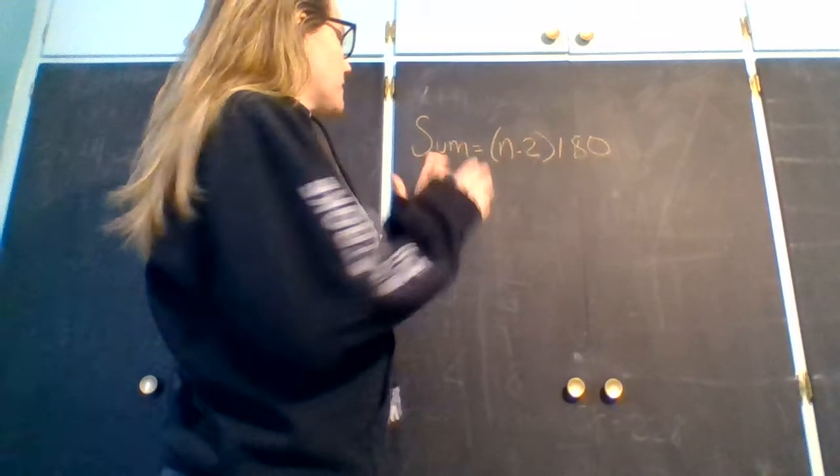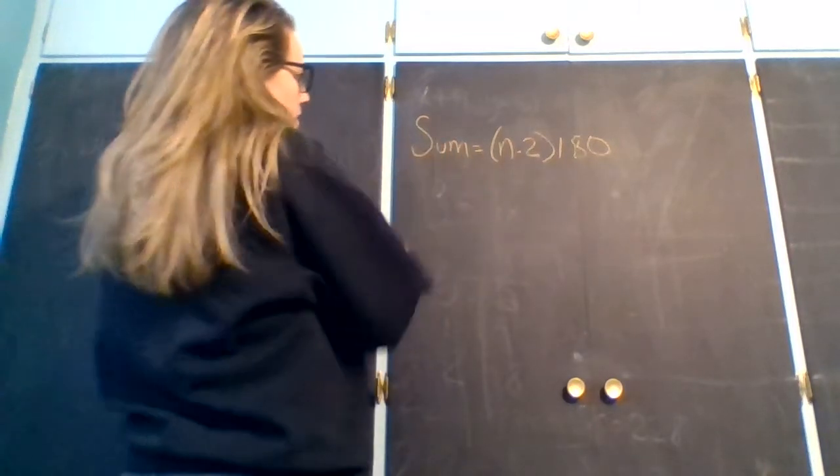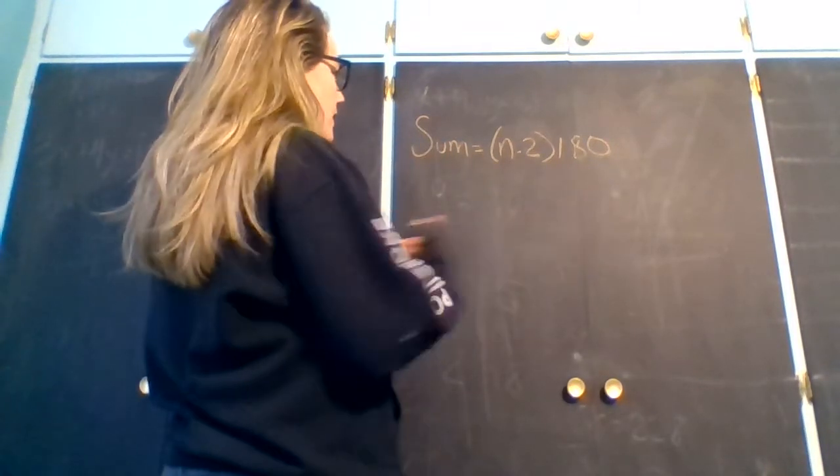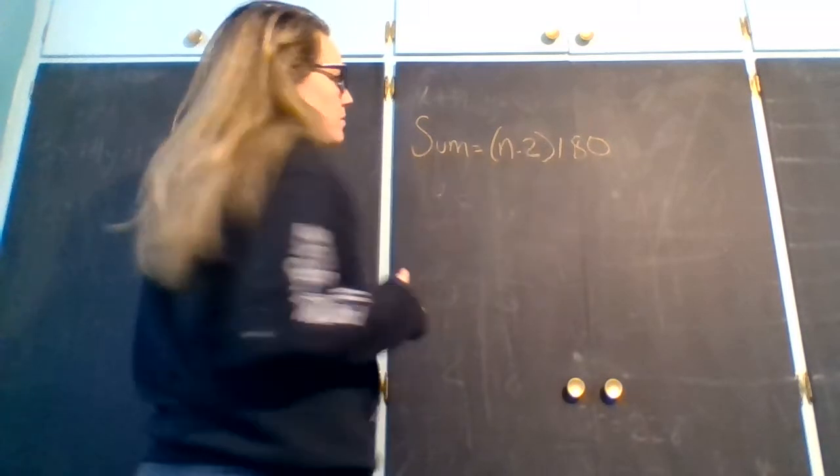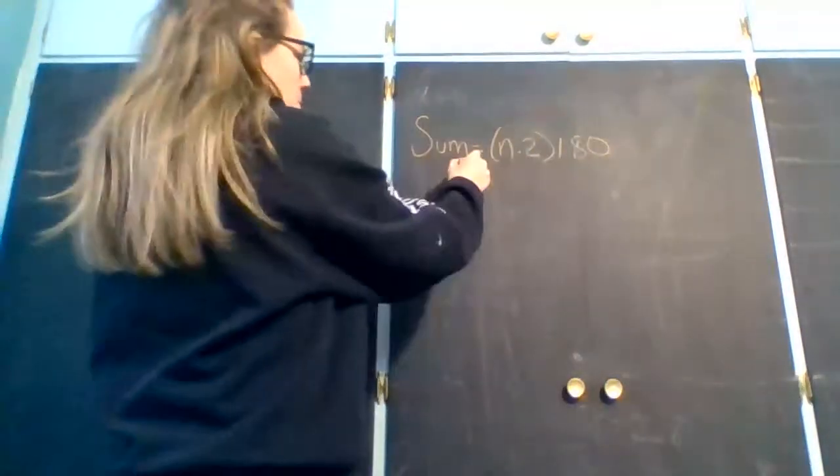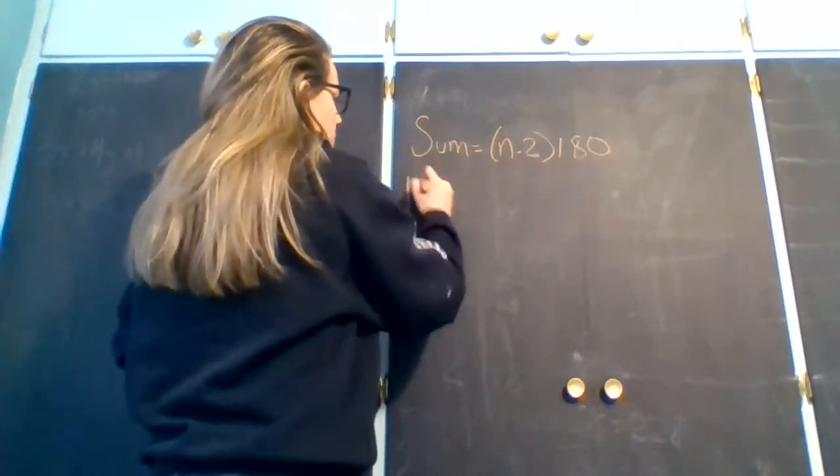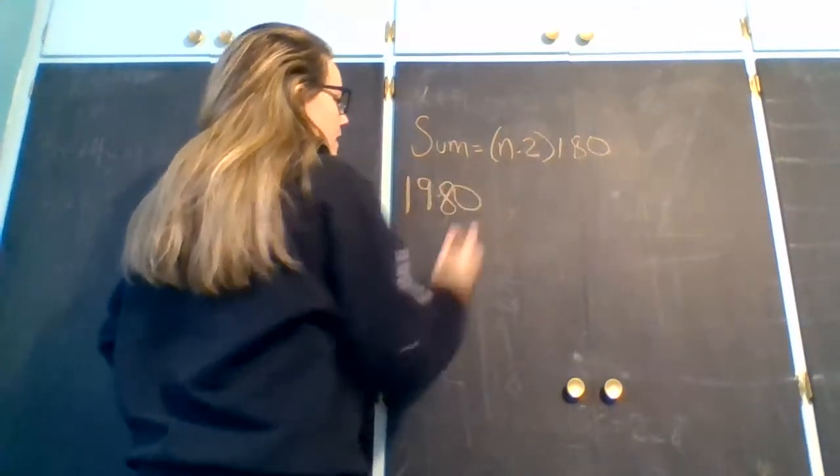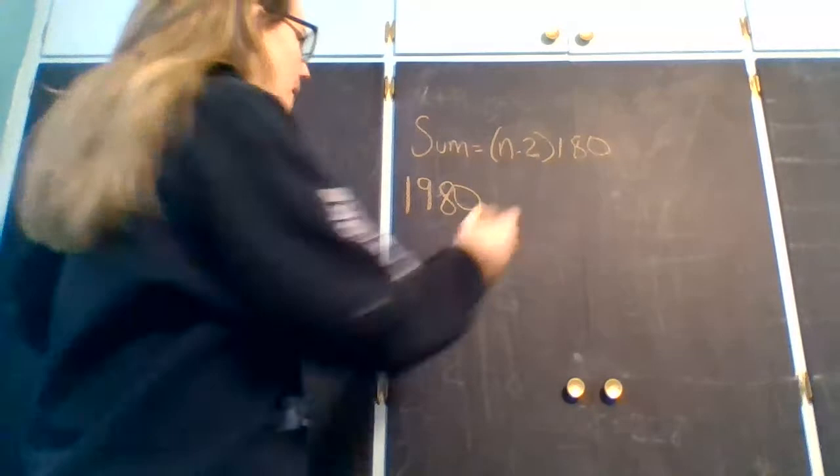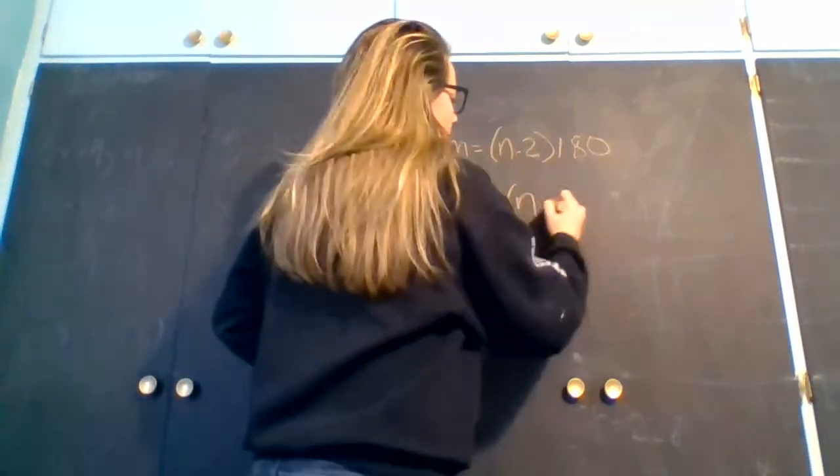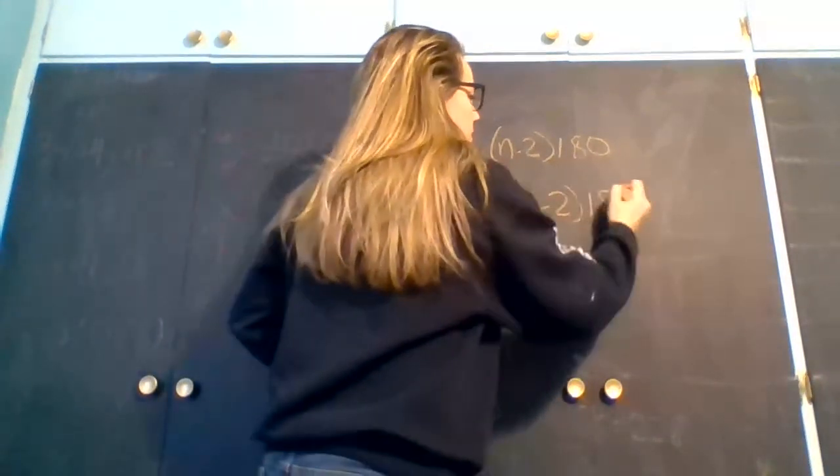So this is the formula that it keeps giving you as a hint where the sum of the interior angles of a polygon equals n minus 2 times 180, and the problem told you that the sum of the interior angles is 1,980, so you know that that needs to go there, and then continue setting up the problem because we still don't need the rest of it.